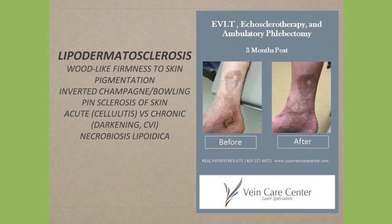Lipodermatosclerosis is very similar sometimes to necrobiosis lipoidica, which you can see in diabetic patients — it looks very similar to venous insufficiency. A good history is really important for these patients because with necrobiosis you can get recurrent ulcers and wounds as well. If you see patients with recurrent ulcers, make sure they have a good history so you're not missing some of the diabetic changes that can occur in the leg.